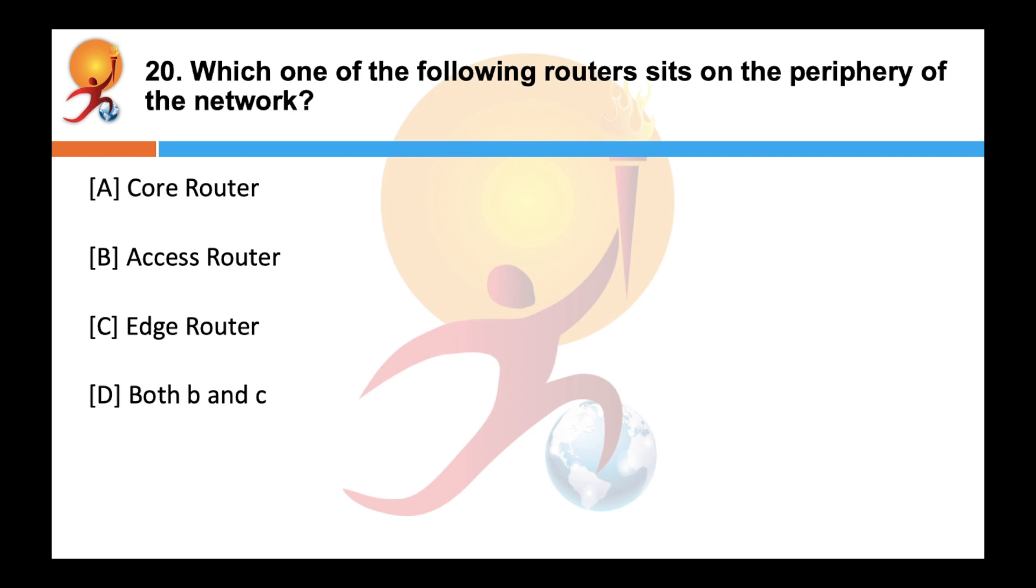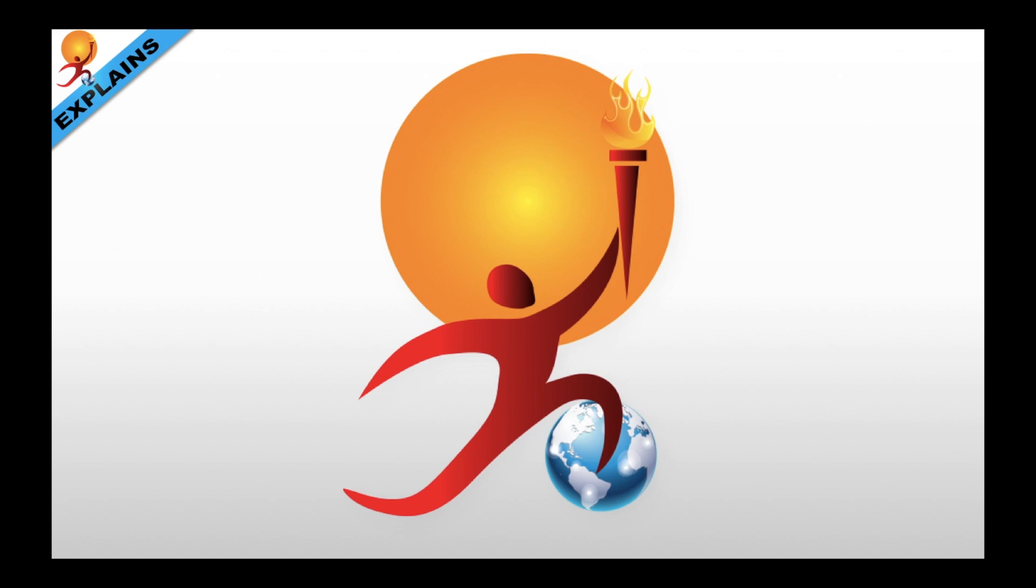Which one of the following routers sits on the periphery of the network? That is at the last end. Correct answer is both B and C. An access router is a router that sits at the periphery of a network. It is also known as an edge router. It is in contrast with core router which is a router that resides in the middle of the network. Thank you and see you in the next one.